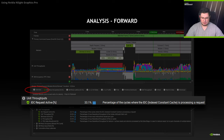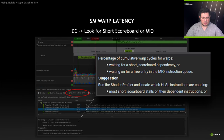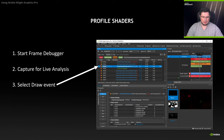So what is IDC requests active? If you go to the SM warp latency section and select IDC request active, you will see a description: it means waiting for a short scoreboard. The suggestion is to run the shader profiler and look for latencies produced by short scoreboard or a free entry in the memory input instruction queue.